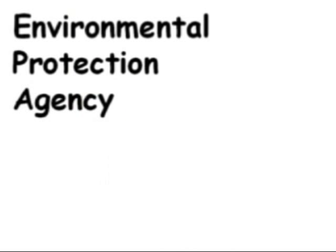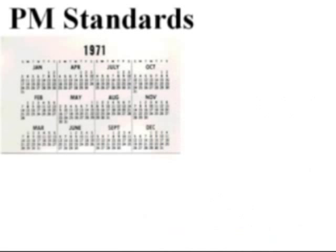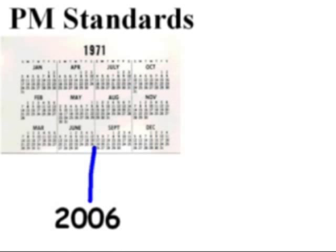This is where the EPA gets involved. To protect our public health and welfare, the EPA issues National Ambient Air Quality Standards for six criteria pollutants, and particulate matter is one of these. The EPA first issued standards for particulate matter in 1971. As we learn more about pollutants and the effects on human life, the EPA continues to tweak the standards in the best interests of society. The last revision to the standards were made in September of 2006.